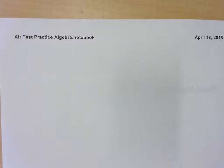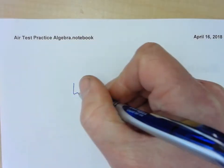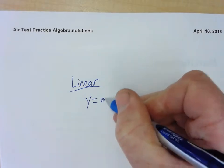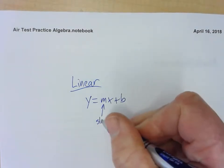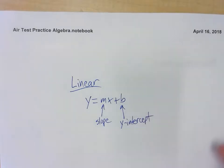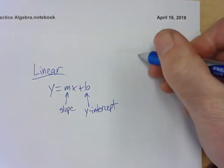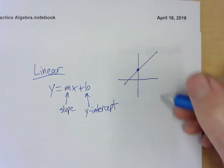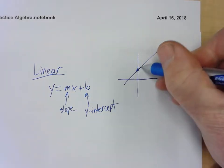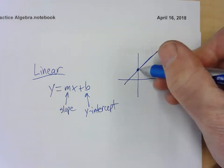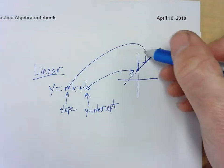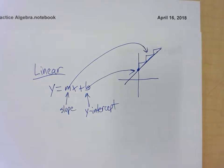You need to understand the difference between three kinds of functions. The first kind is linear functions. Linear functions make lines, like y equals mx plus b. m is the slope and b is the y-intercept. You have the y-intercept which is your b — it's your starting point, where something starts. Your change is the slope, going up and over, up and over. The b is where you start, and the m is the staircase in which you travel.